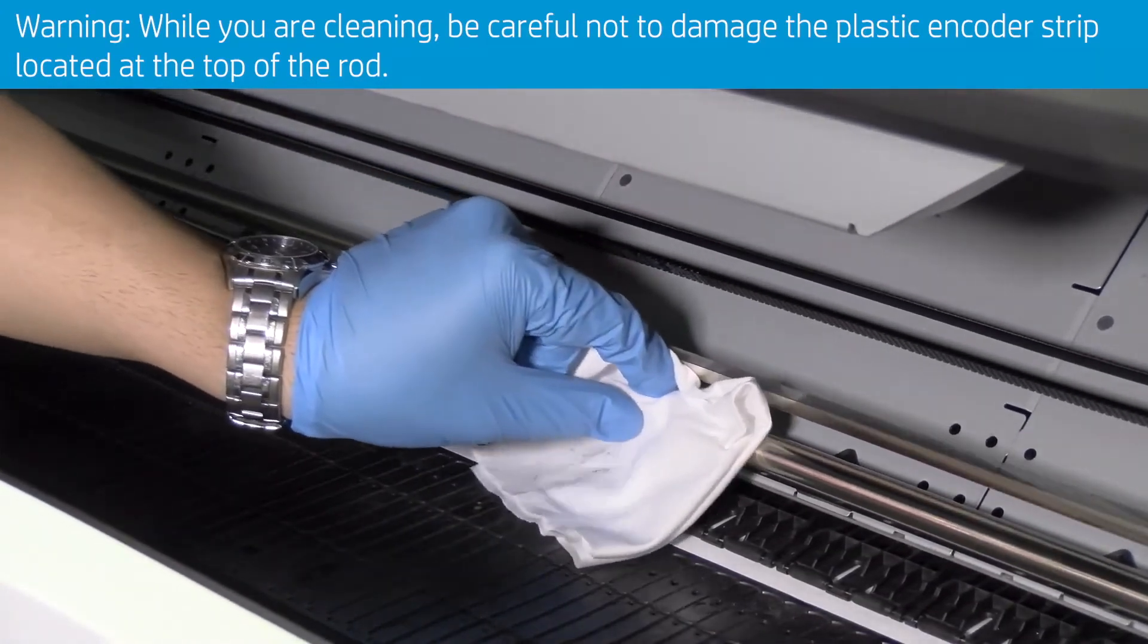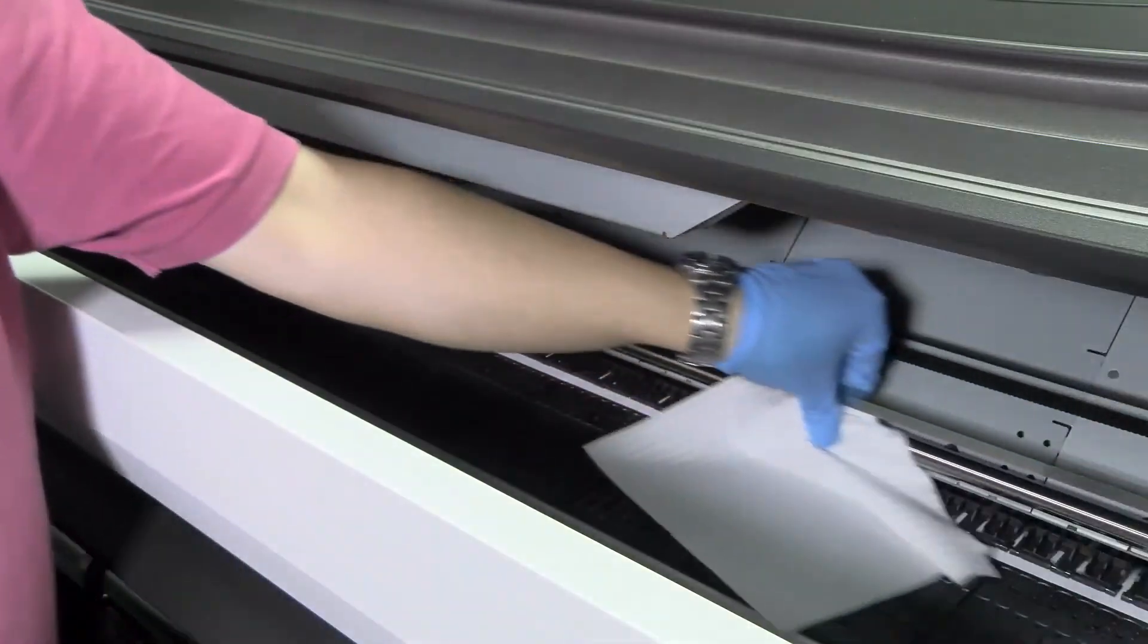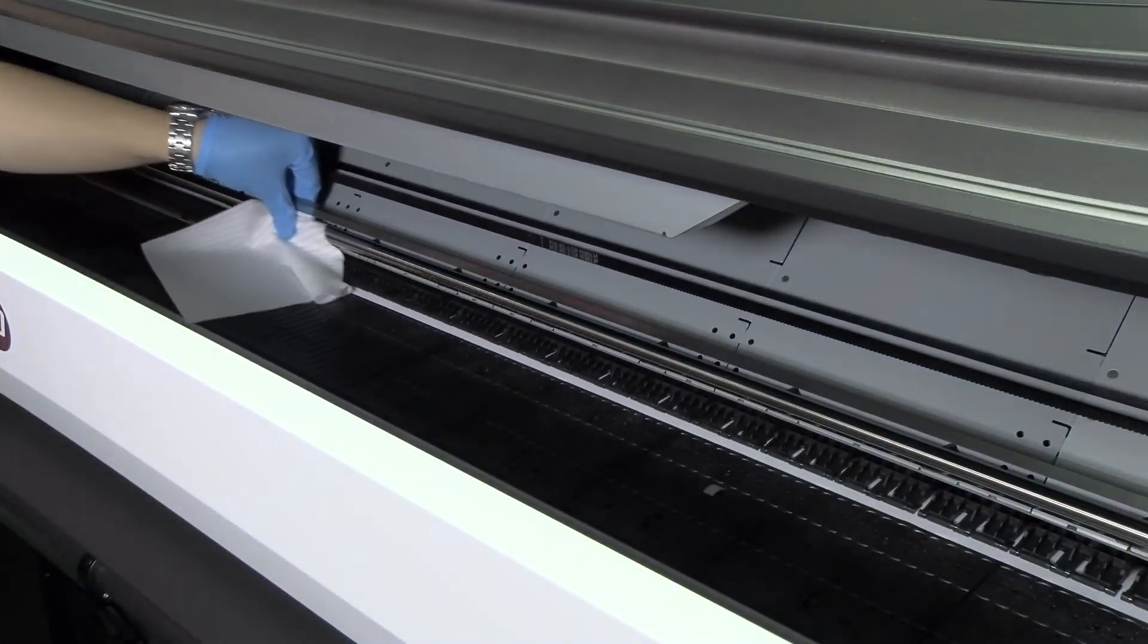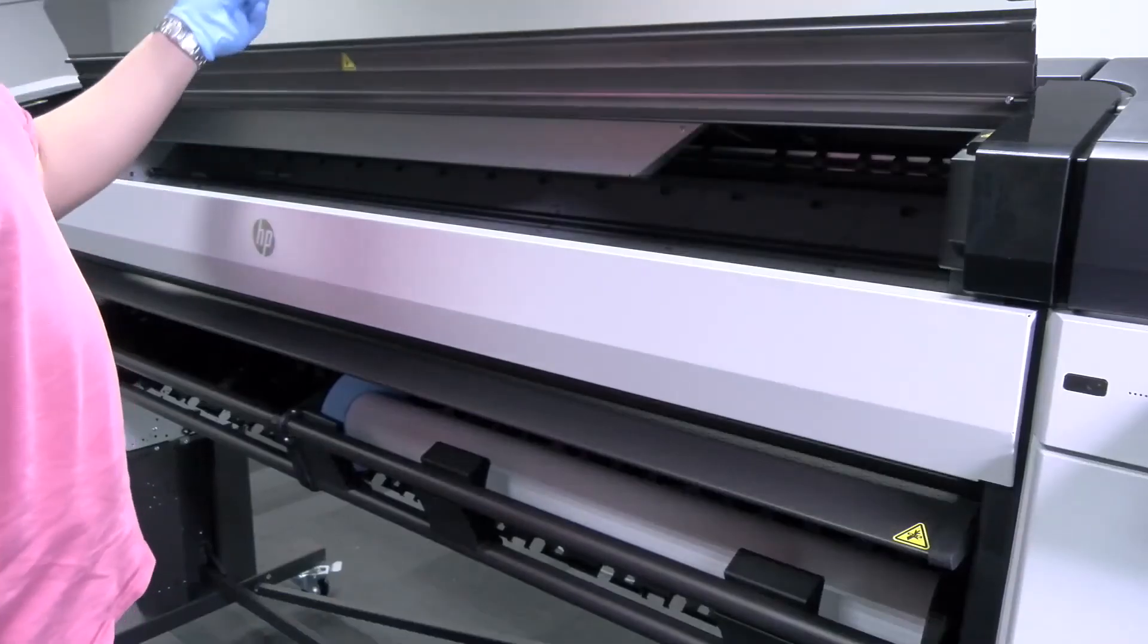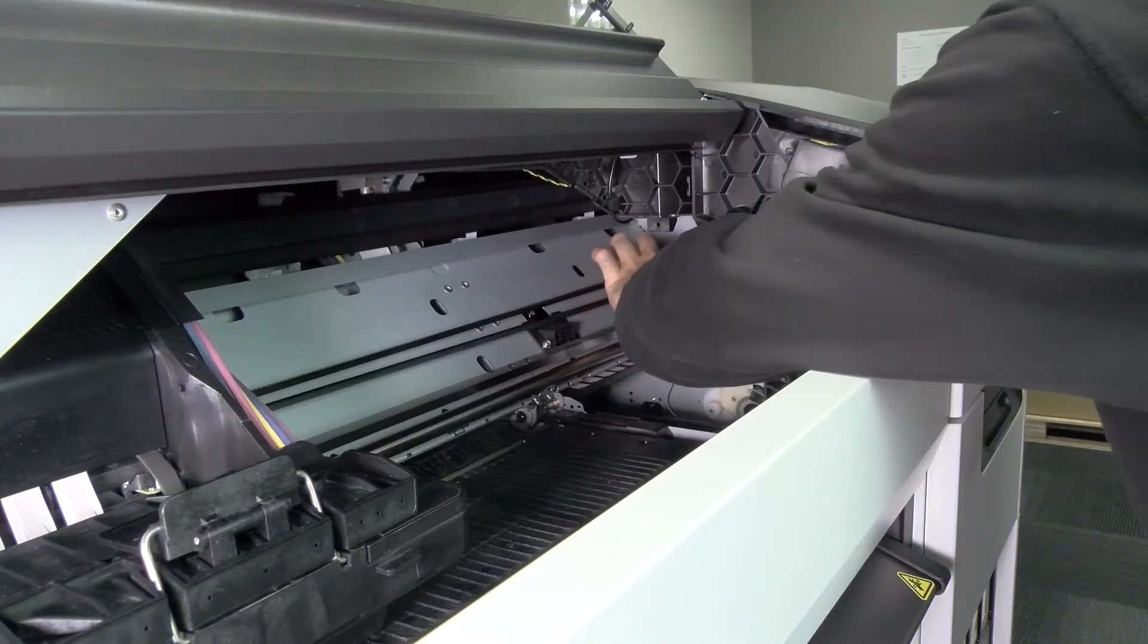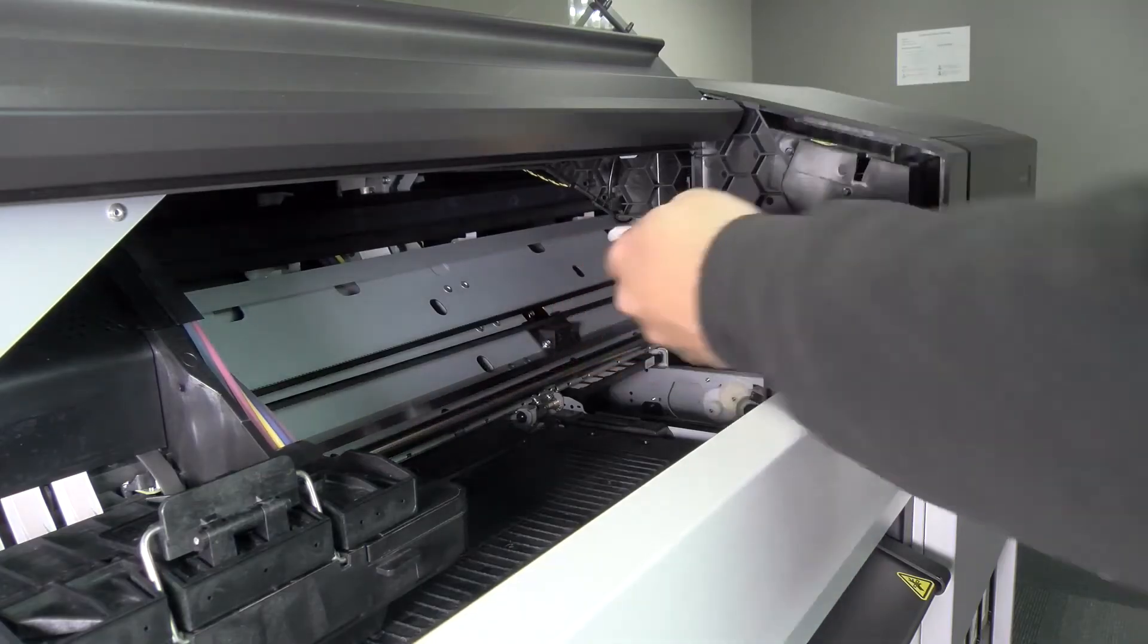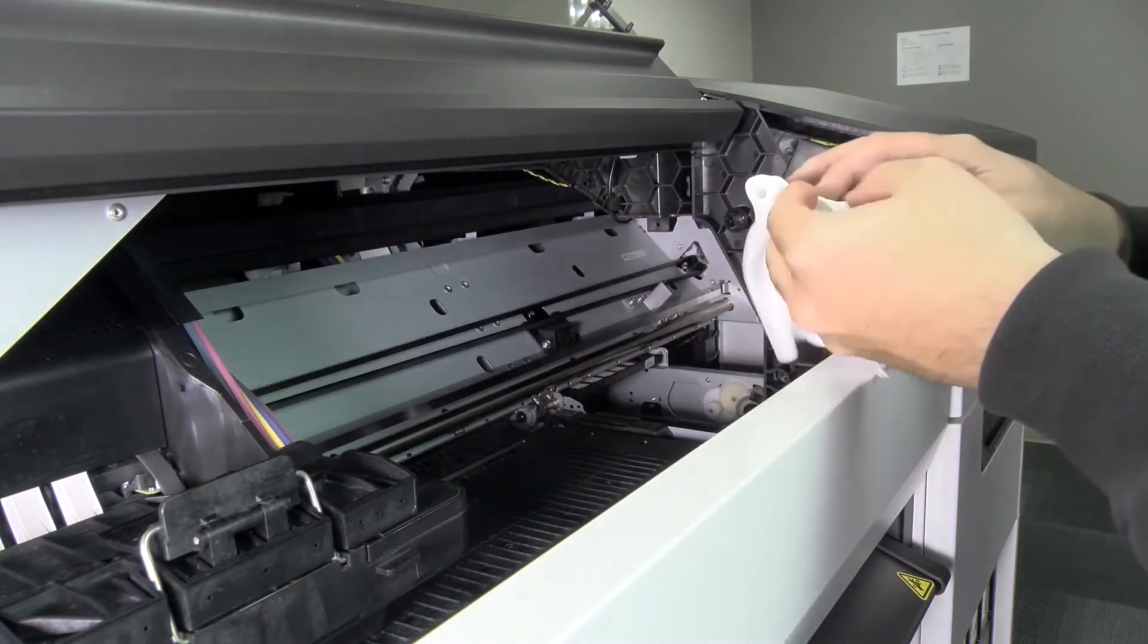Dry the rod bar, then close the front cover. Open the front cover again. Now clean the other part of the carriage rod, including the part of the rod under the right cover.